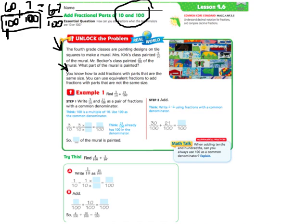It tells us you know how to add fractions with parts that are the same size. So you're going to have to use that equivalent fraction trick in order to change them to fractions with parts that are the same size. So in order to find three tenths plus twenty one one hundredths, I'm going to have to change this into hundredths.